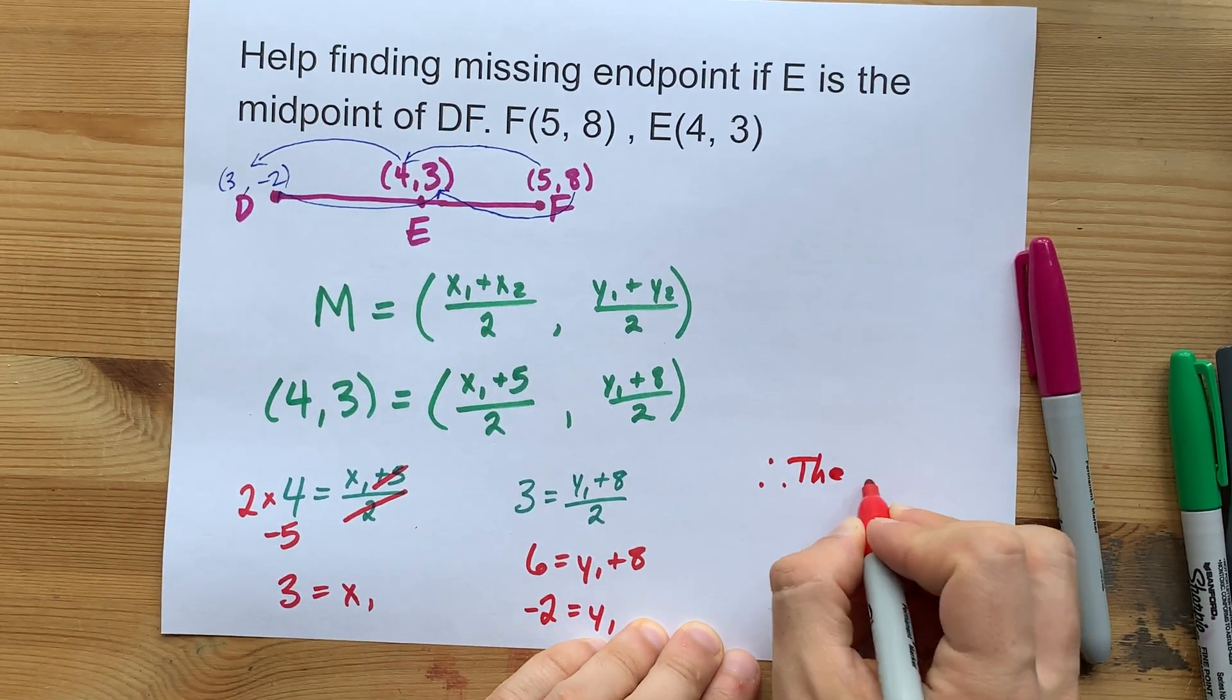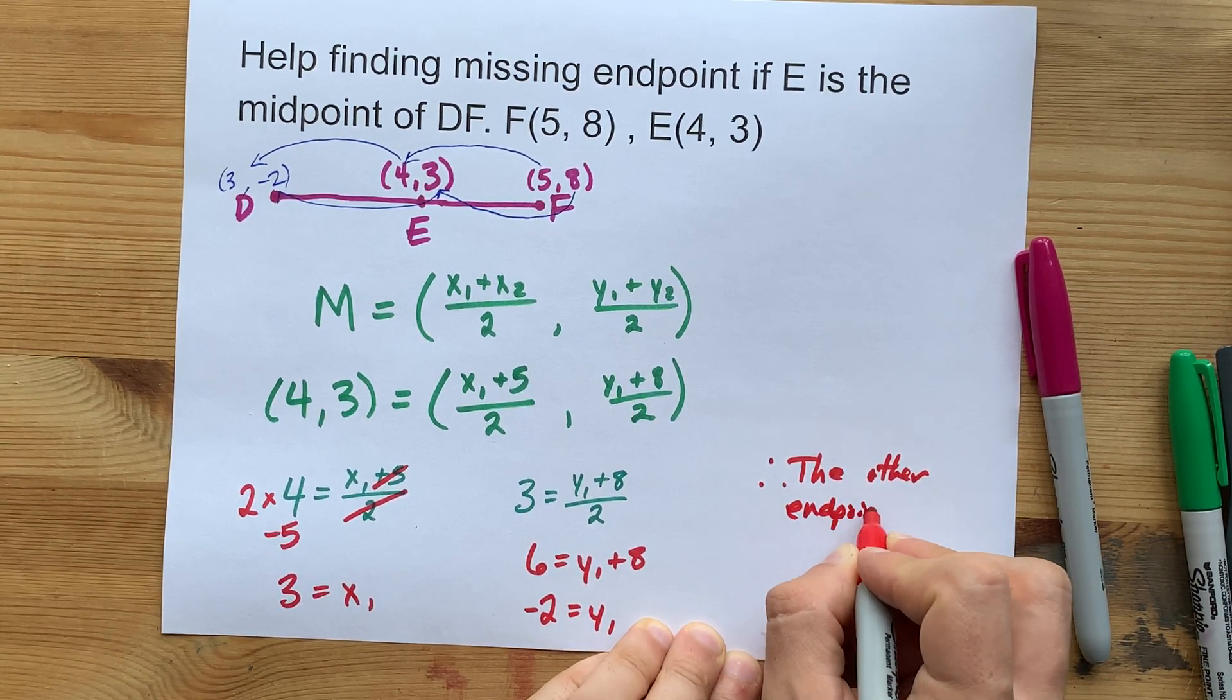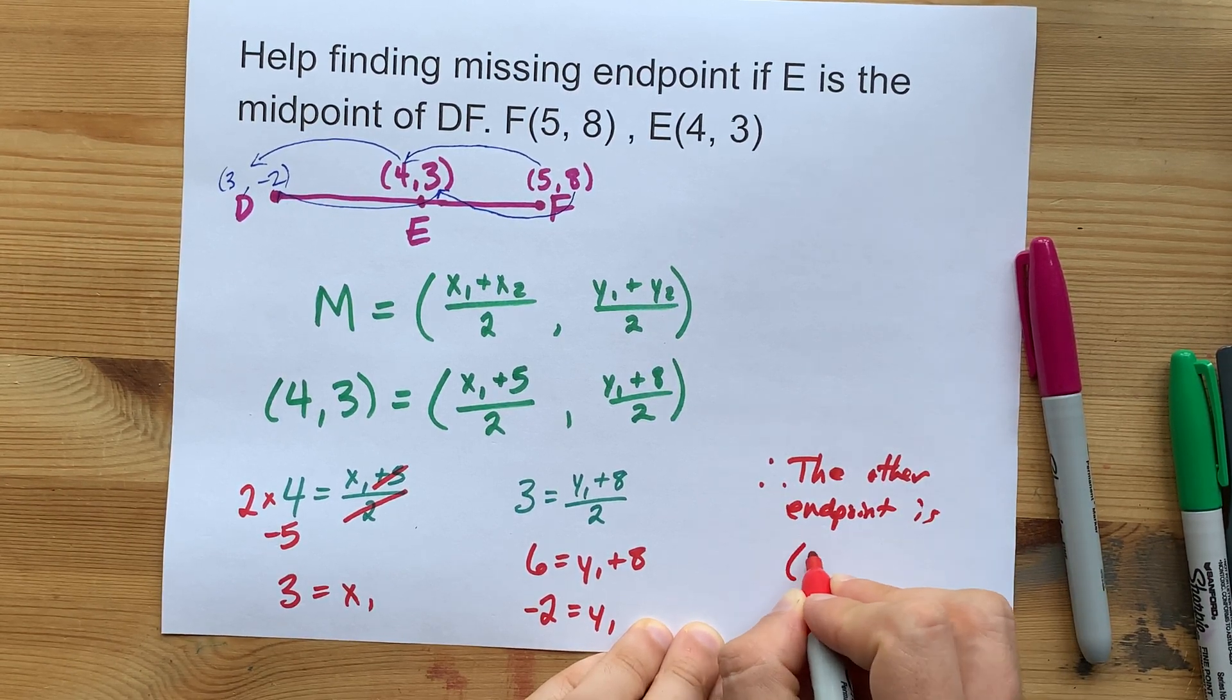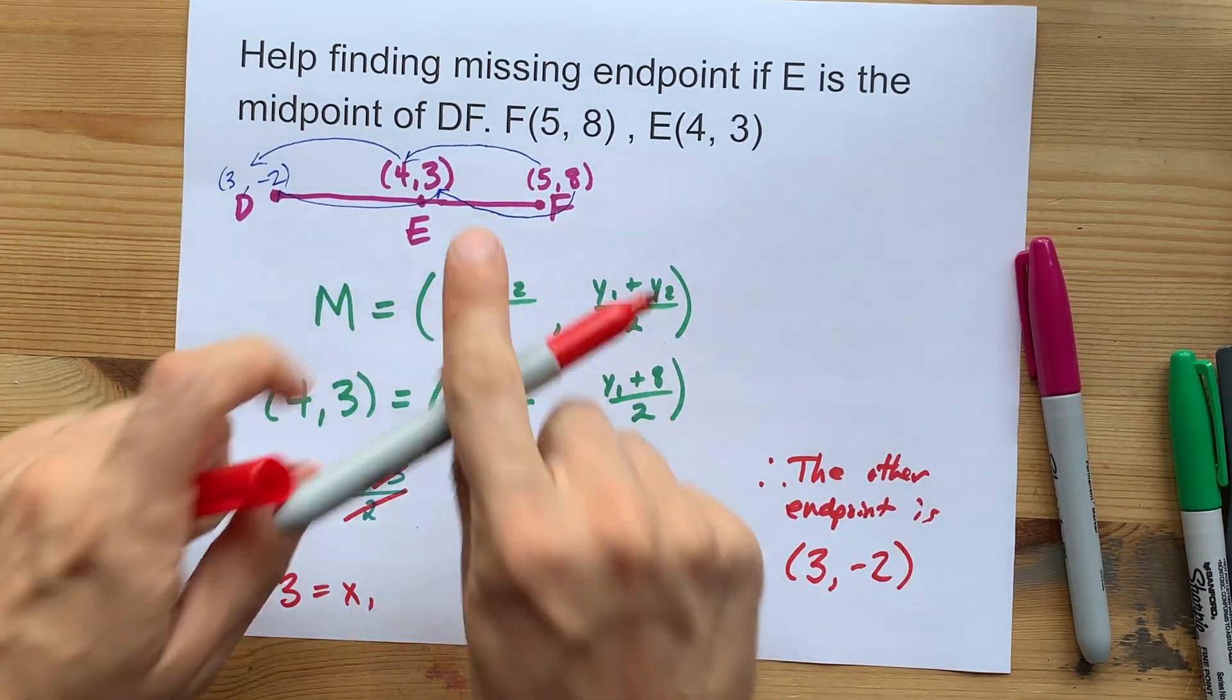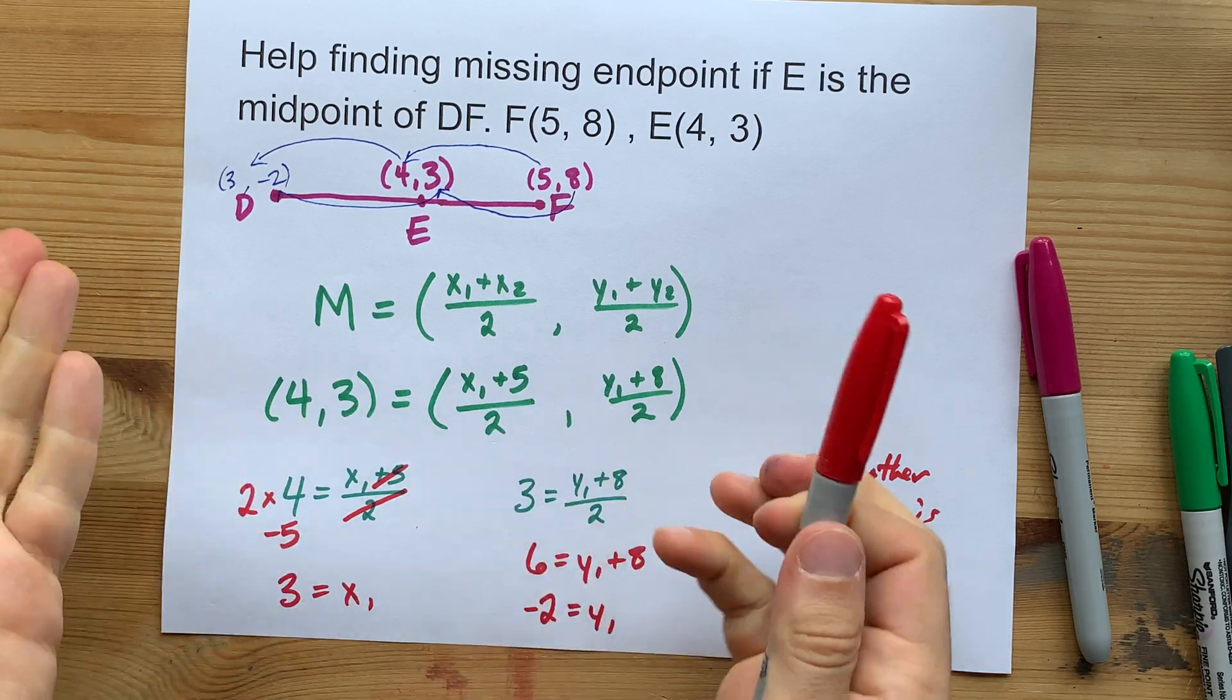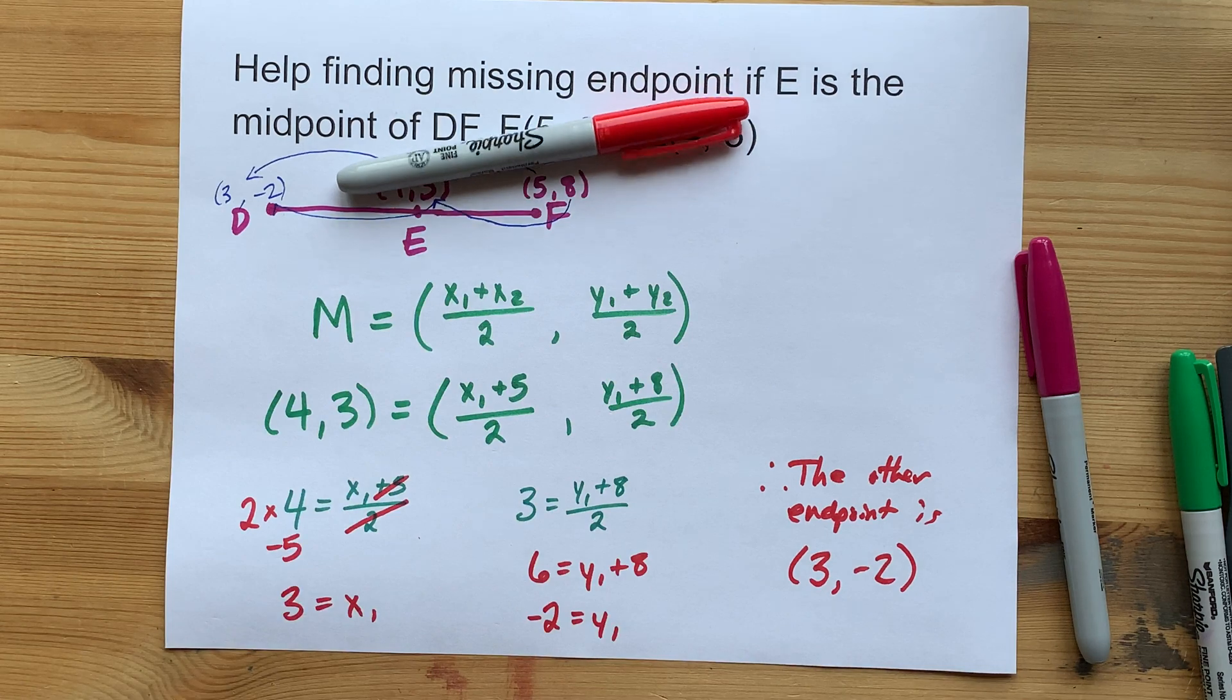Therefore, the other endpoint is 3, negative 2. Which way do I do it in the real world? Definitely this way. Which way does your teacher want it? Well, I know. Why don't you ask him? Best of luck.